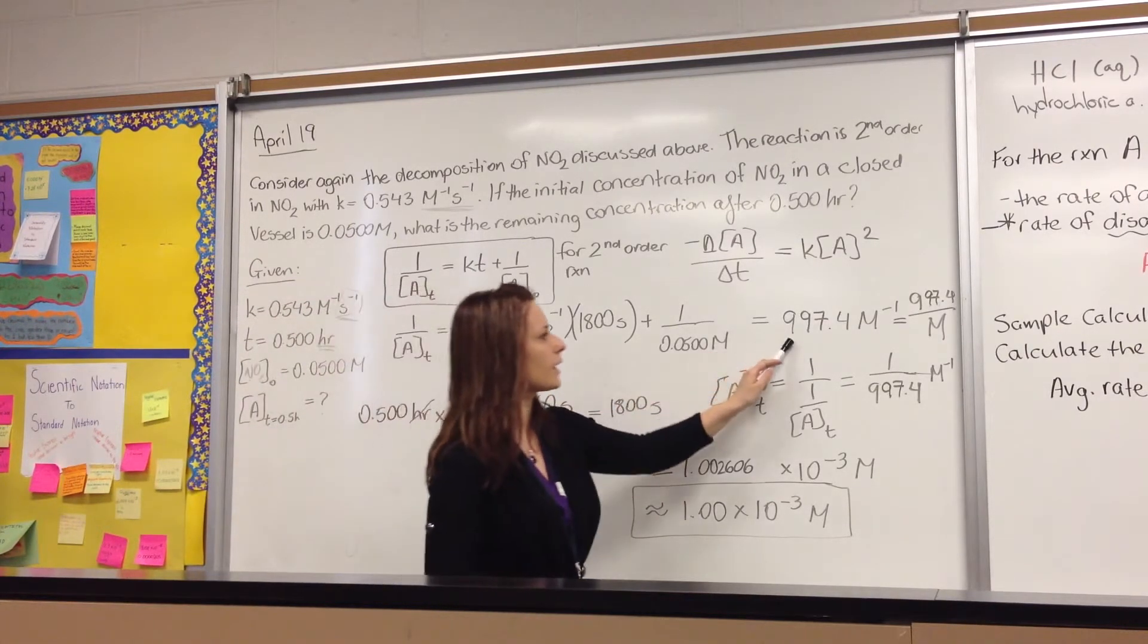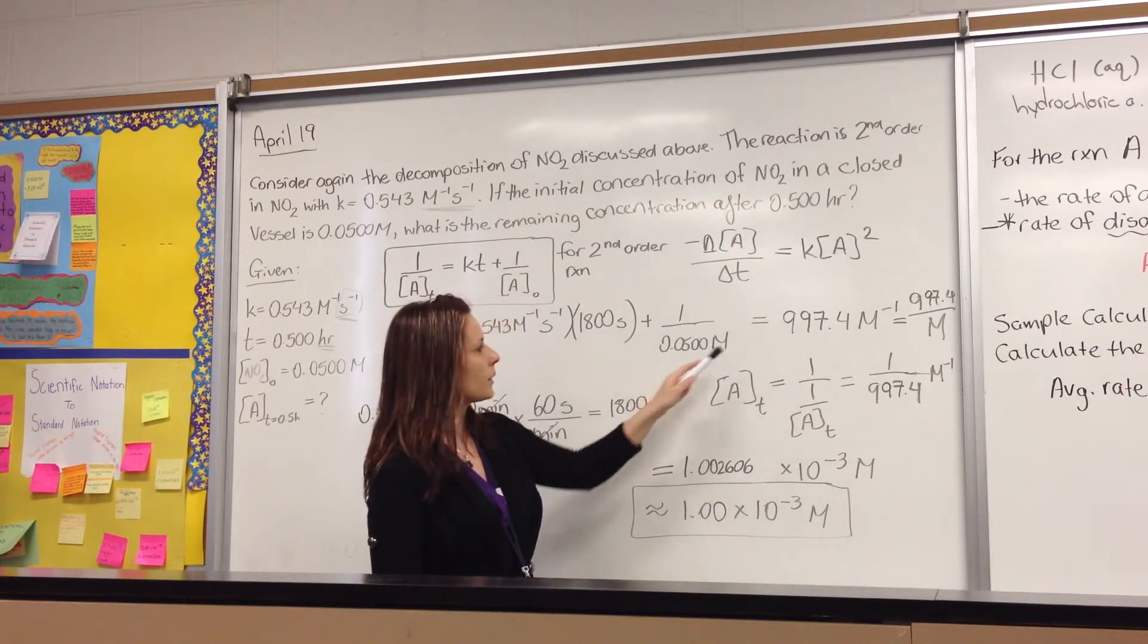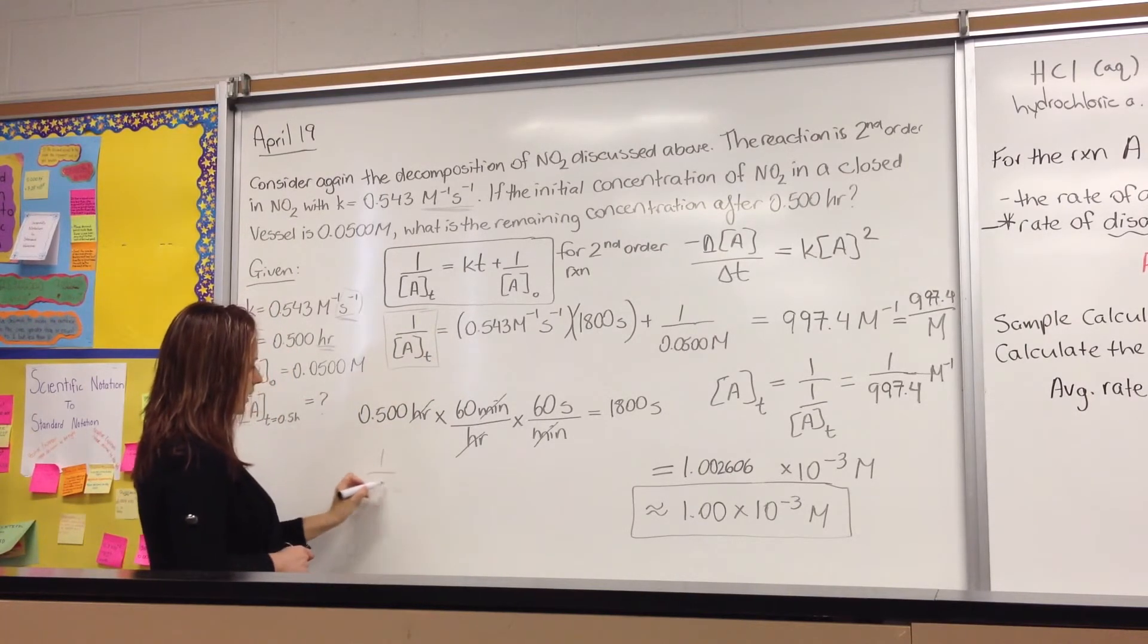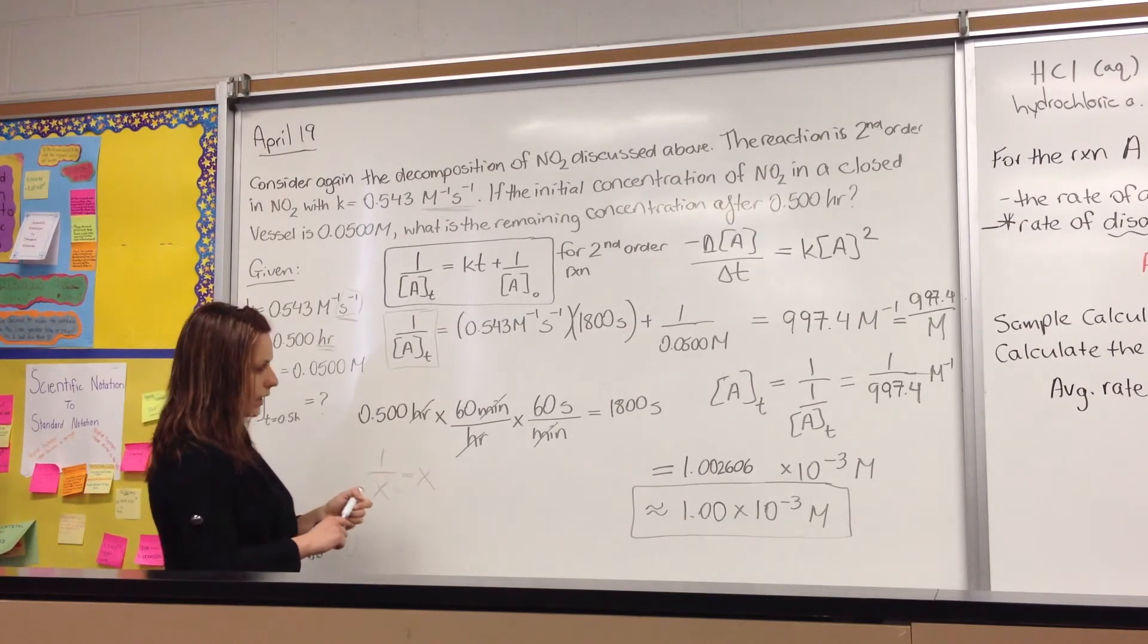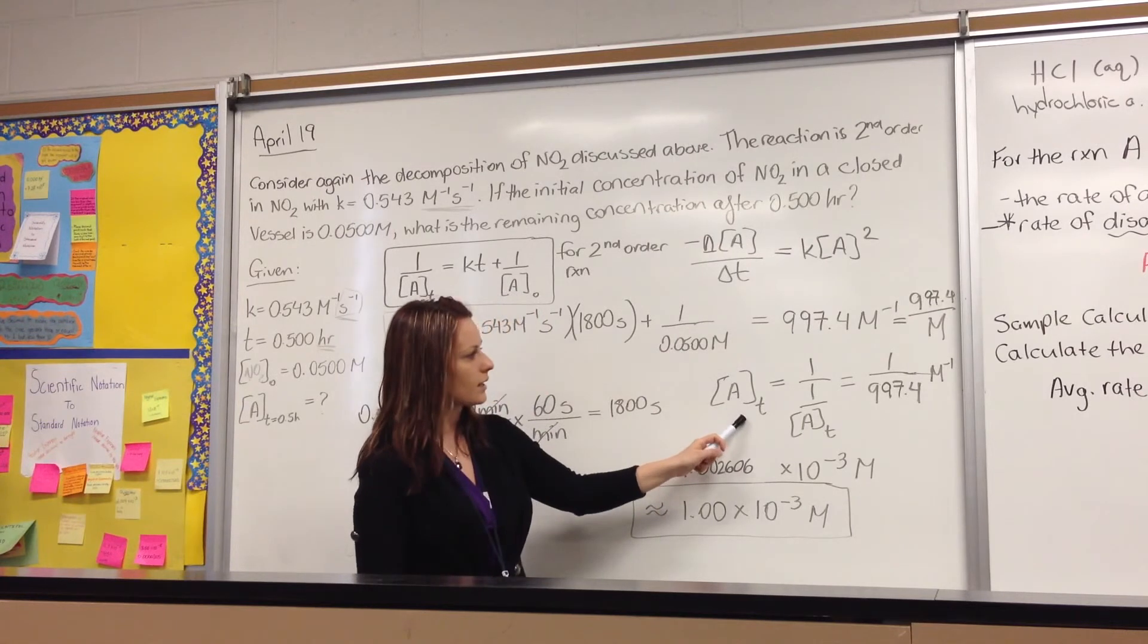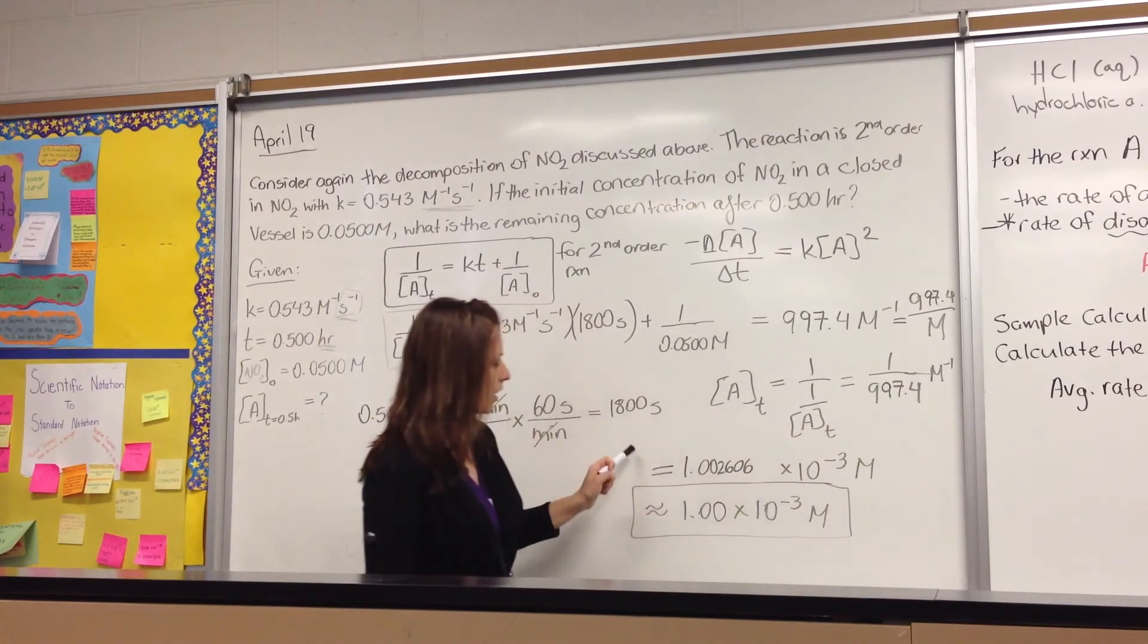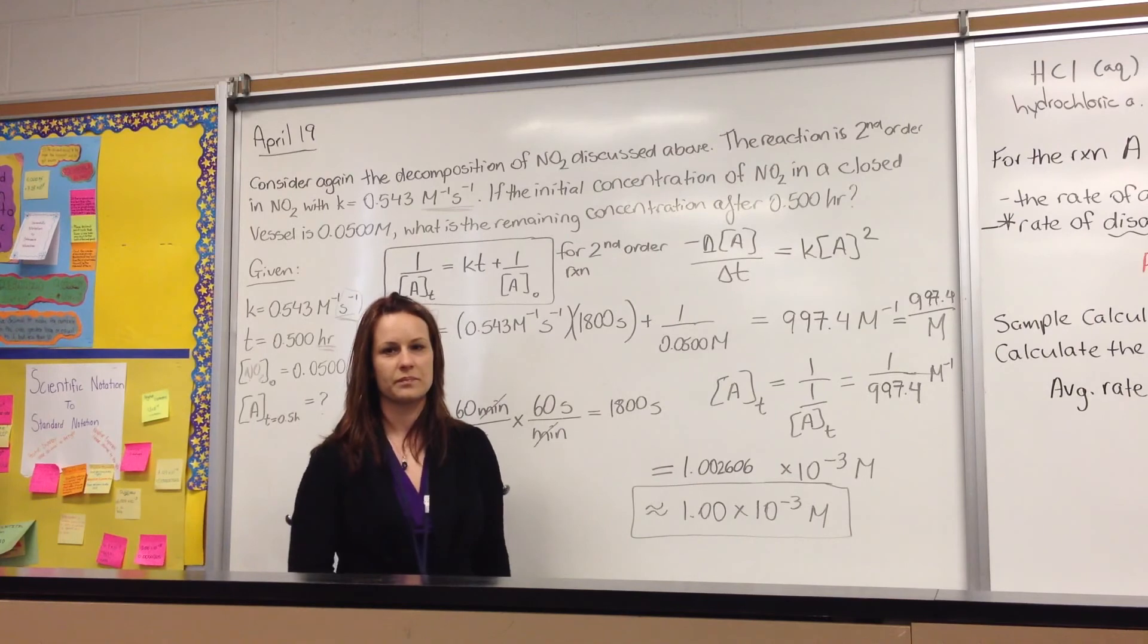What we end up getting is 997.4 per molar. But then you have to remember that this is 1 over A at T, which is the same thing as 1 over X. And what we're asked to find is X. So we have to take the inverse of this value. So in order to give us A at time T, we have to take the inverse of 1 over A at time T, which gives us approximately 1 times 10 to the negative 3 molar.